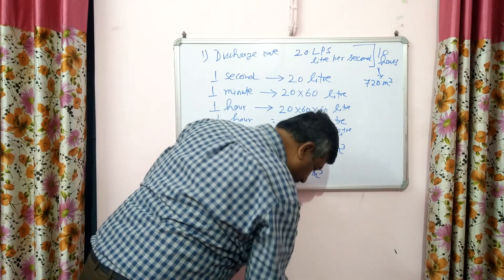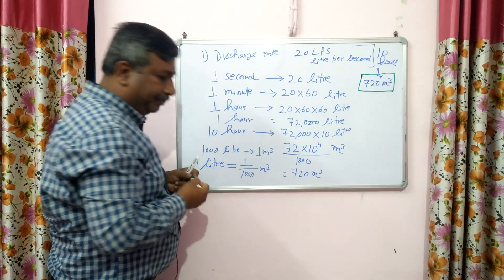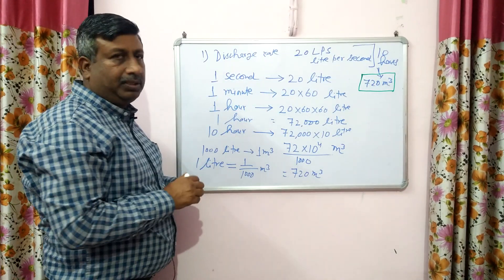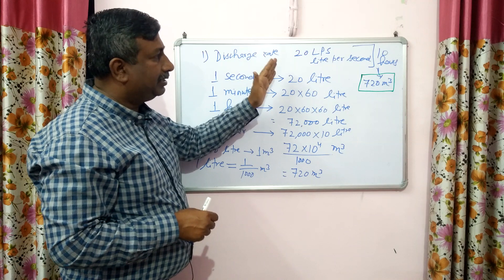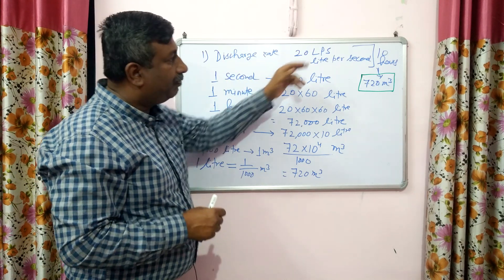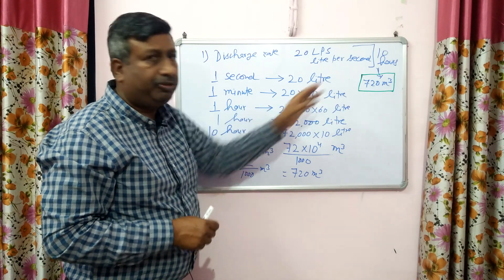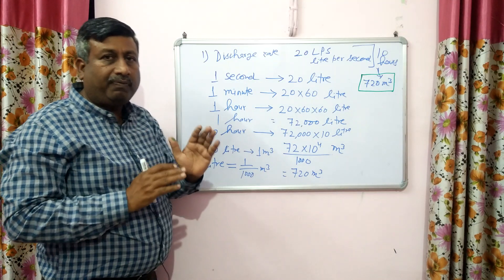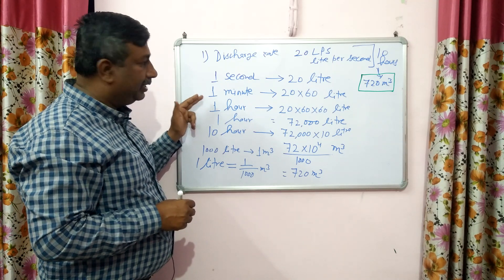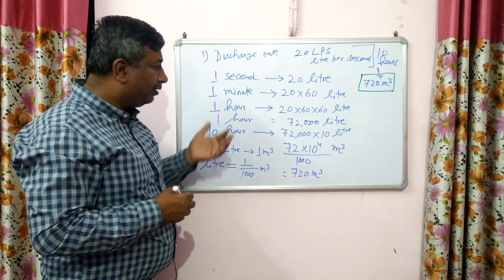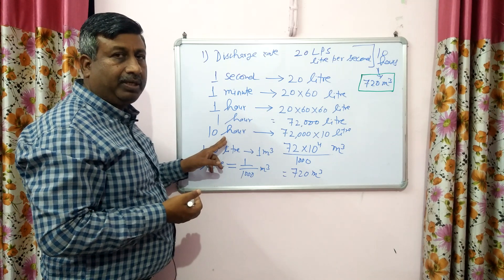This is the important quantity which will decide the depth of irrigation or the area to be irrigated. If the discharge rate is 20 litres per second and the tube well runs for 10 hours, then the volume of water in 10 hours is 720 cubic metres. The steps are: calculate per second, then per minute, then per hour, then for the given hours.